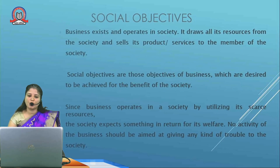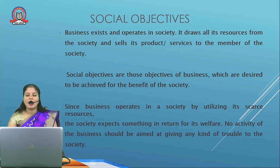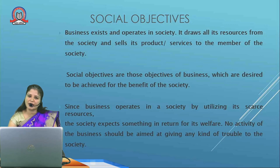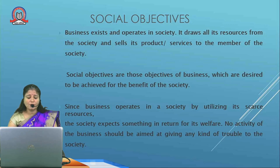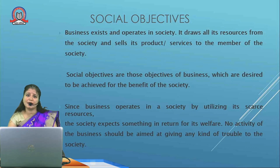Next is social objective. Apart from economic objective, the businessman has certain social responsibilities towards society: to provide quality goods to customers, to utilize resources in the best possible manner, to protect the environment, not to produce products that are hazardous to the environment or create health hazards, and to ensure that no activity troubles society members — activities should be acceptable by society.